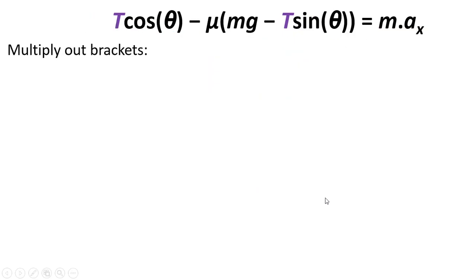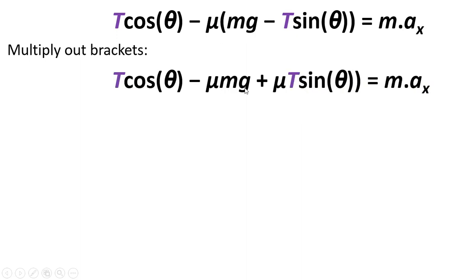So to rearrange this, the first step is to multiply out the brackets. So mu minus mu times mg is minus mu mg. And then minus mu times minus T sin theta is plus mu times mu T sin theta.